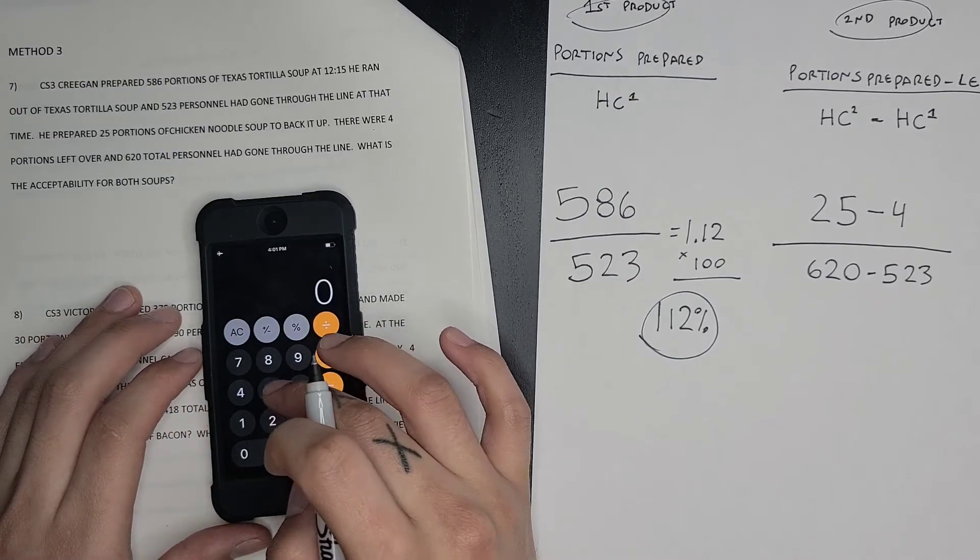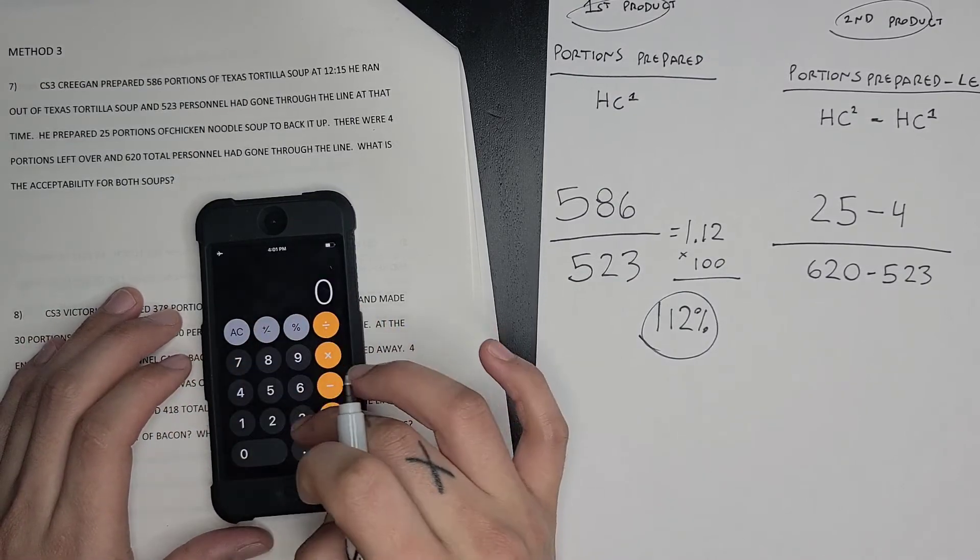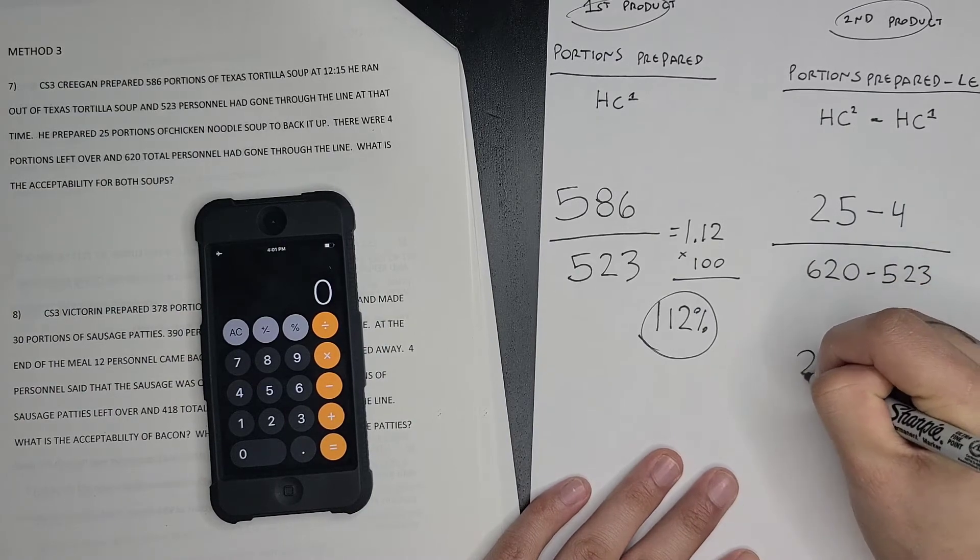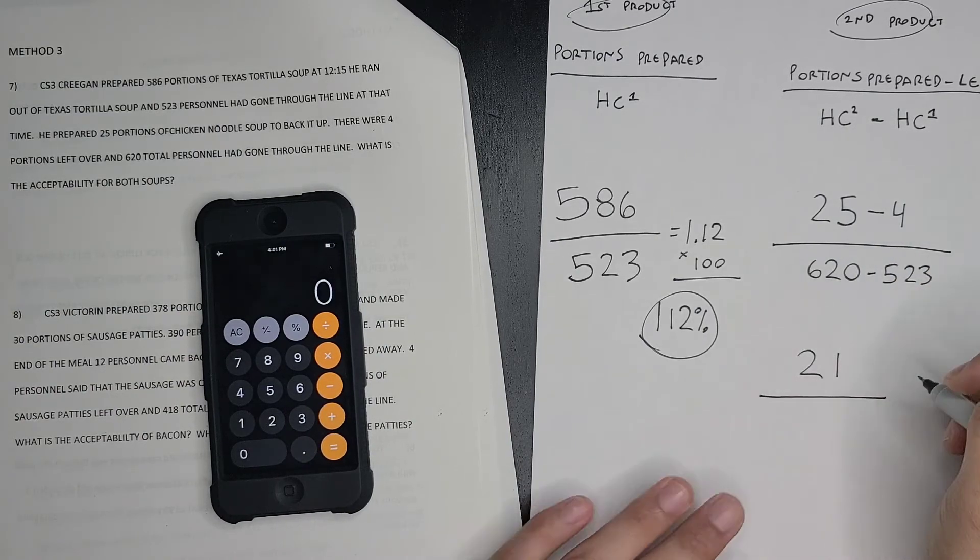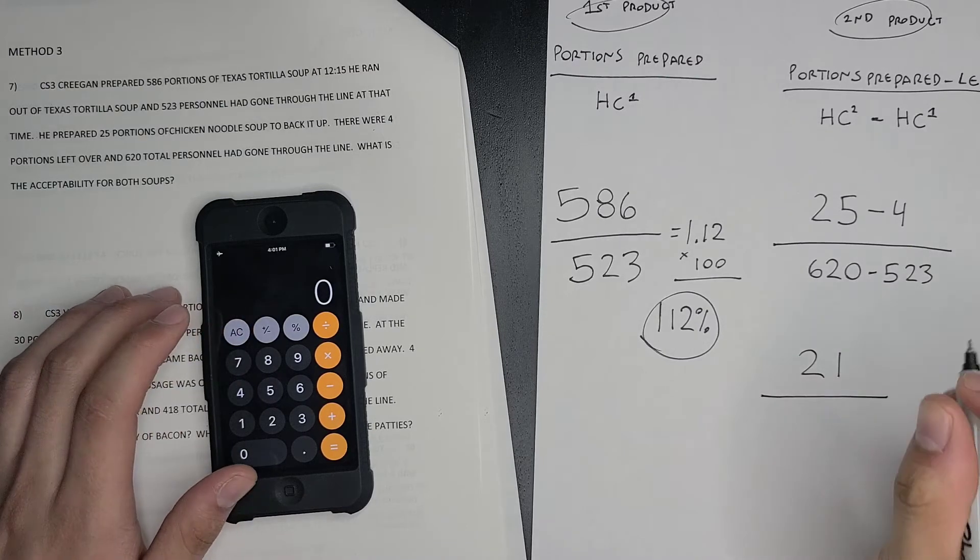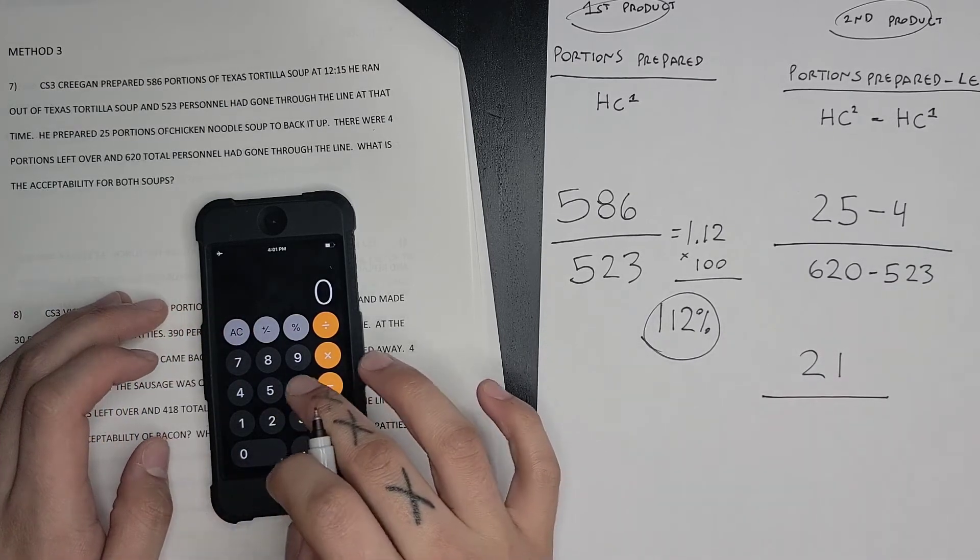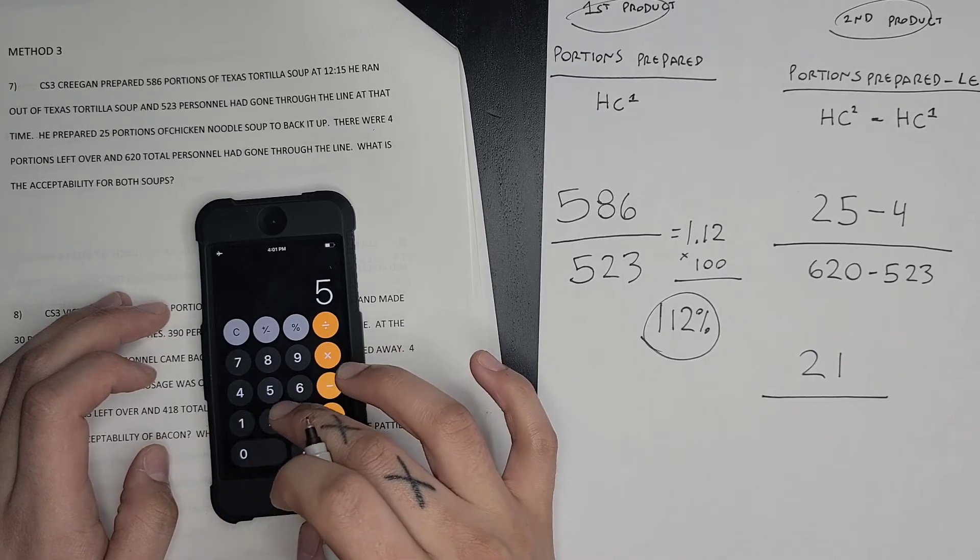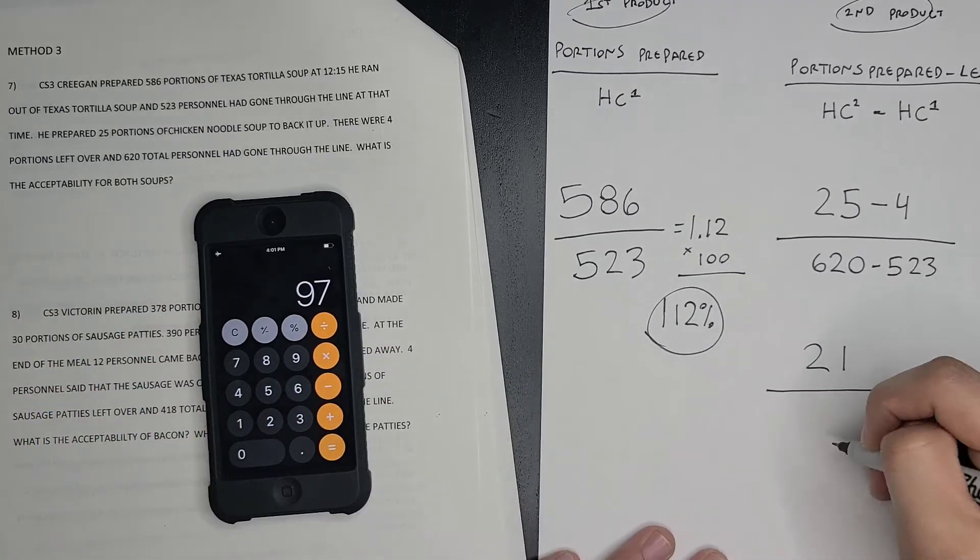So 25 minus 4, that's 21. And then we have to subtract, so 620 minus 523, which equals 97.